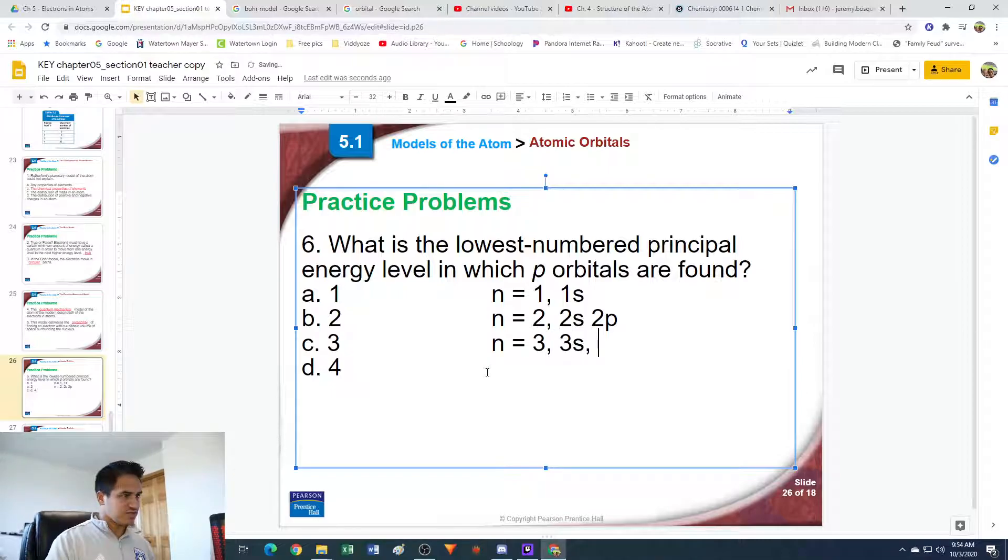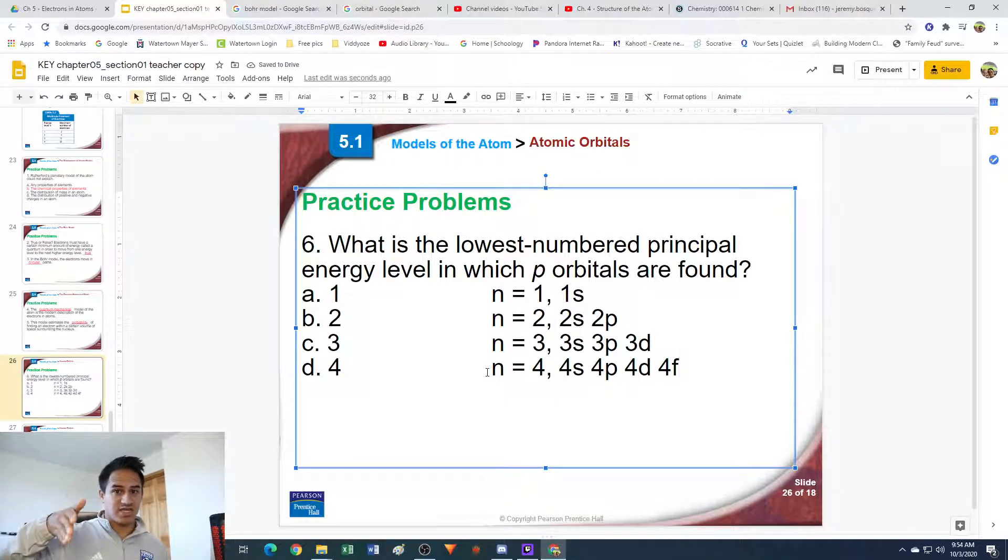We have 3s, 3p, and 3d. In energy level four, we have four sublevels: 4s, 4p, 4d, and 4f. You'll notice they all go in the same order - it's always s, then p, then d, then f. So what is the lowest numbered principal energy level in which p orbitals are found? Energy level two. That's the lowest because there are no p orbitals in energy level one, and energy level three is higher than two. So the lowest energy level where we have p orbitals is energy level two, letter B.